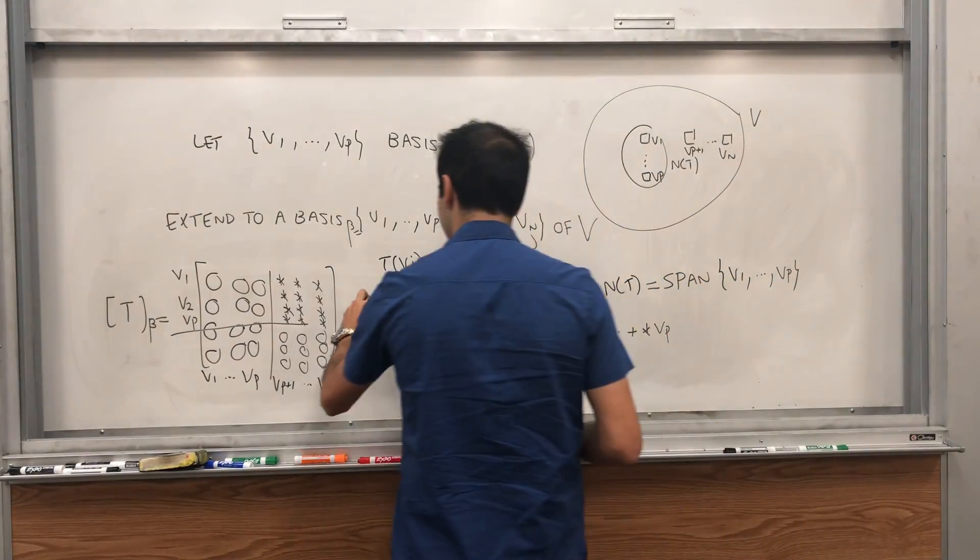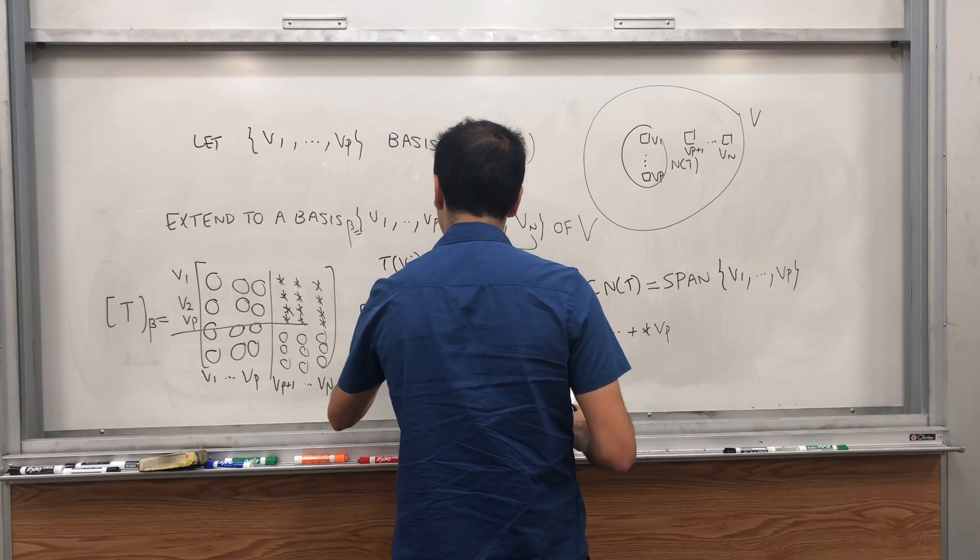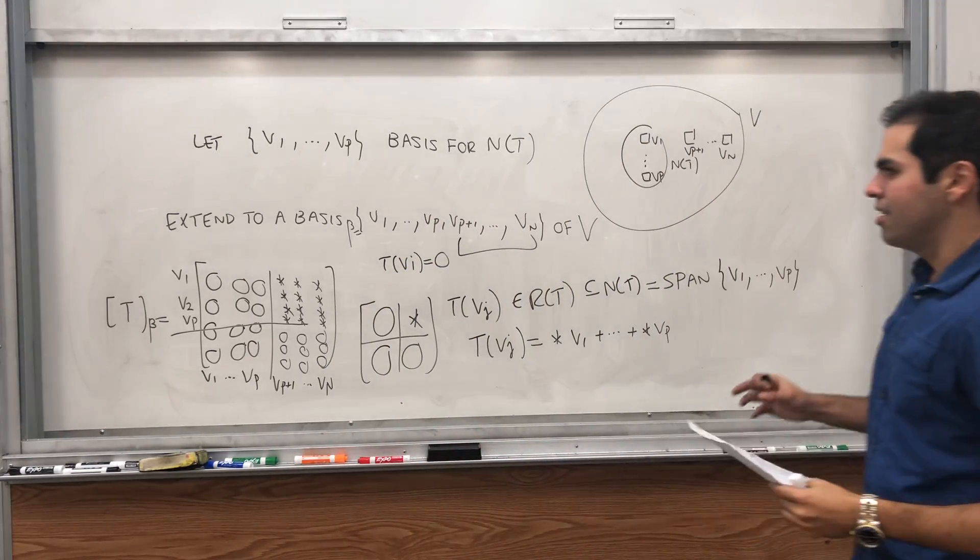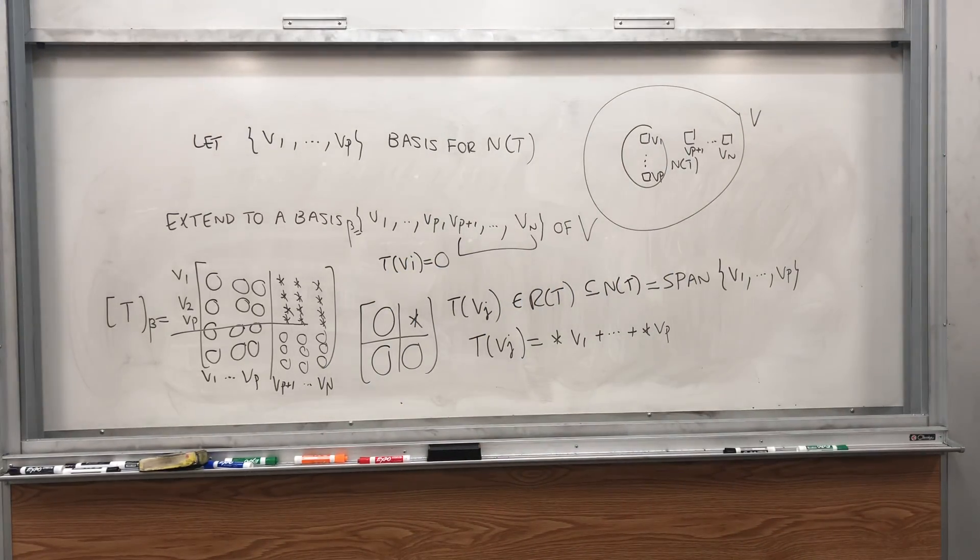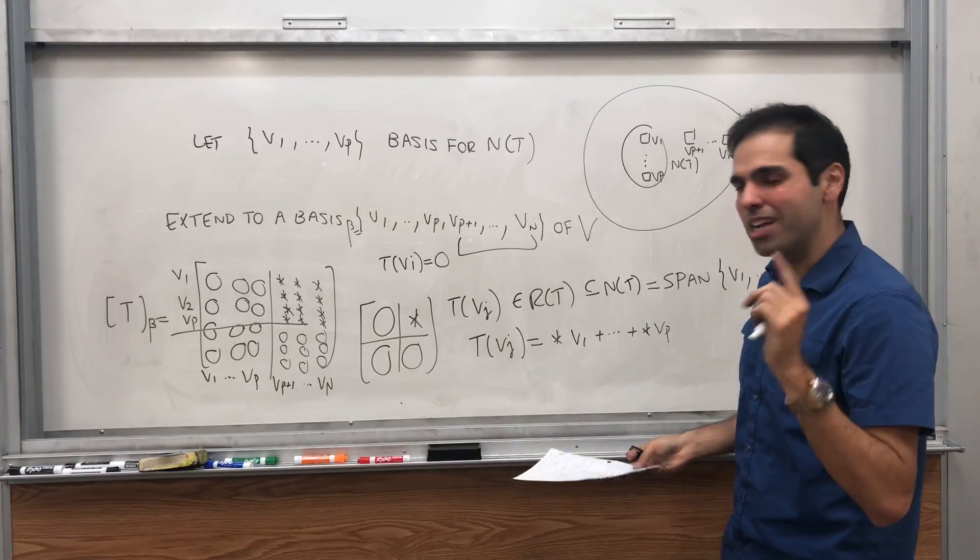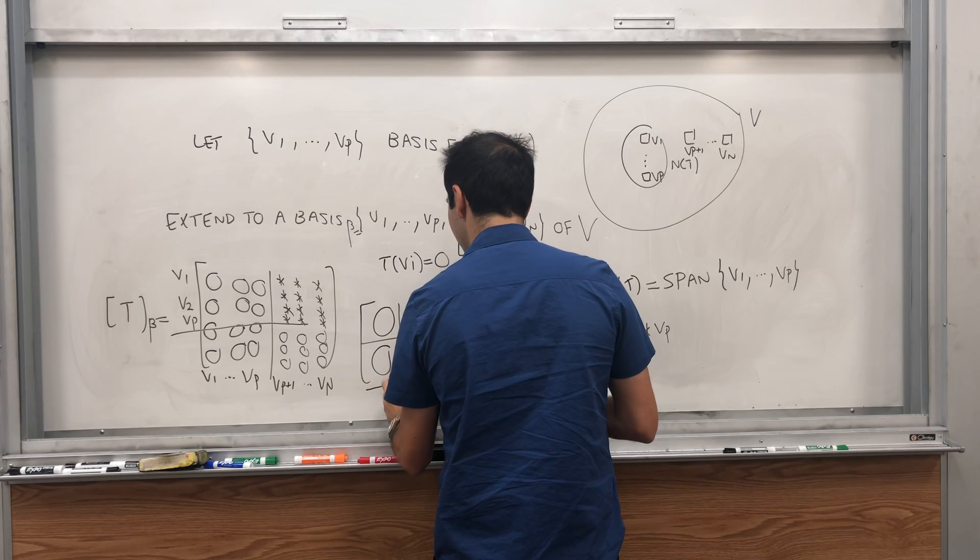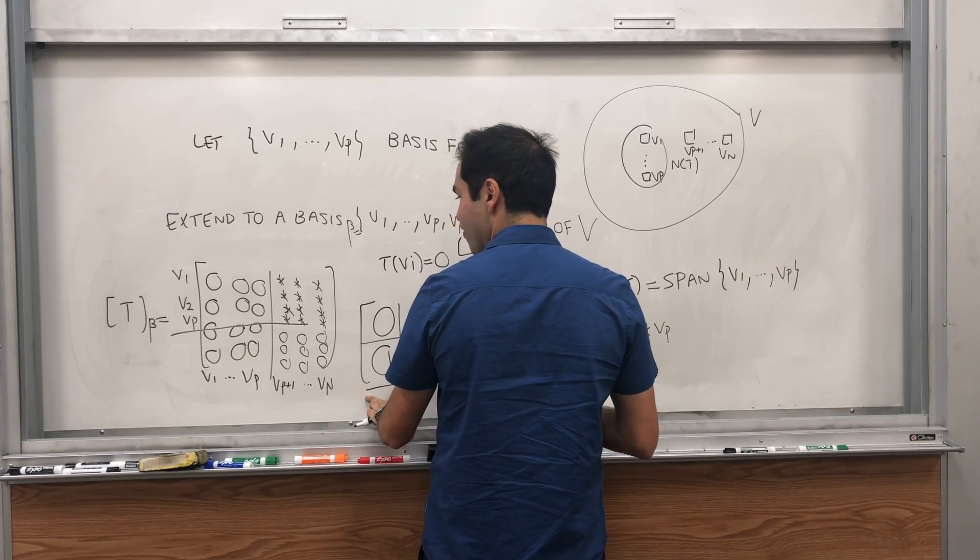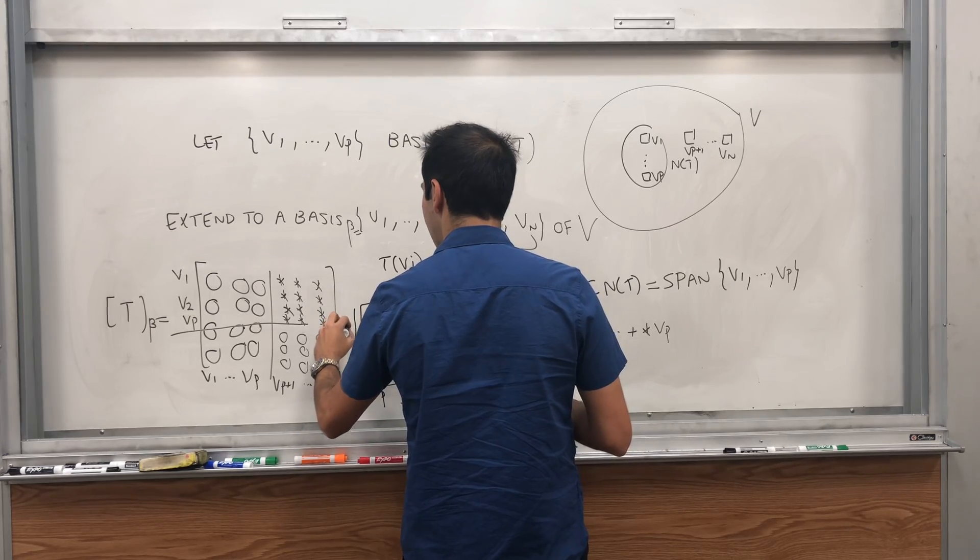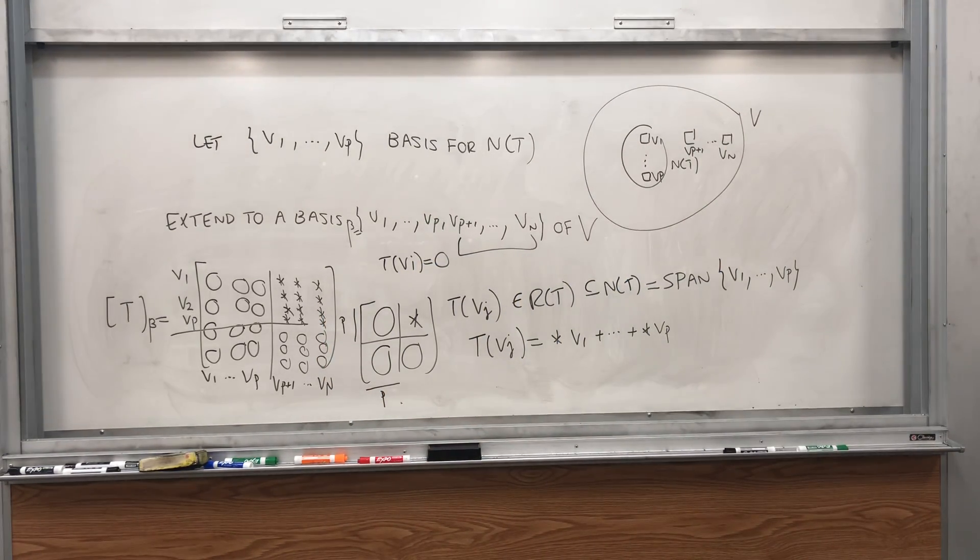and then zero, and then some star. Except what you need to make sure of, so that's why some people are like, oh, well, there might be counterexamples. Not really. You need to make sure that the length of this column, which is p, is equal to the length of this row, which is also p. So,